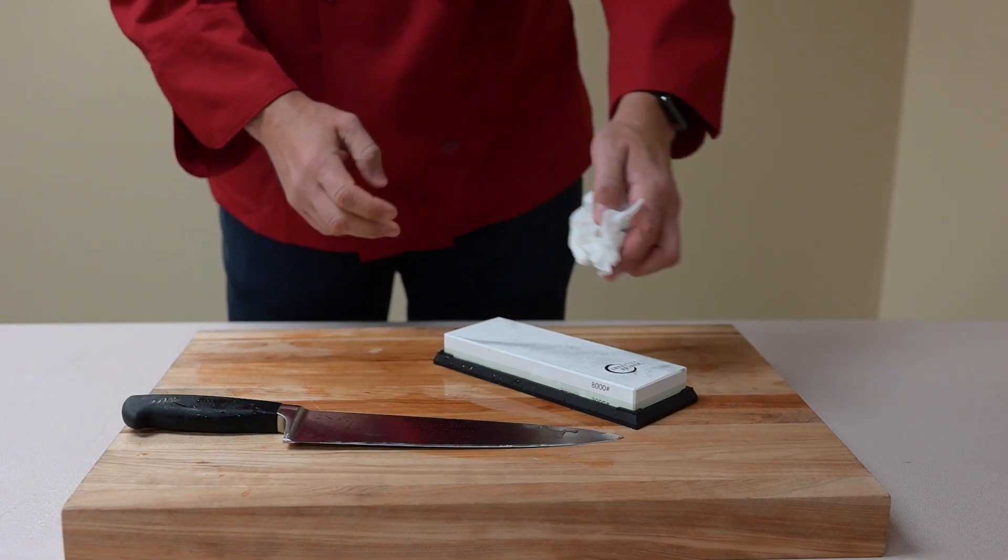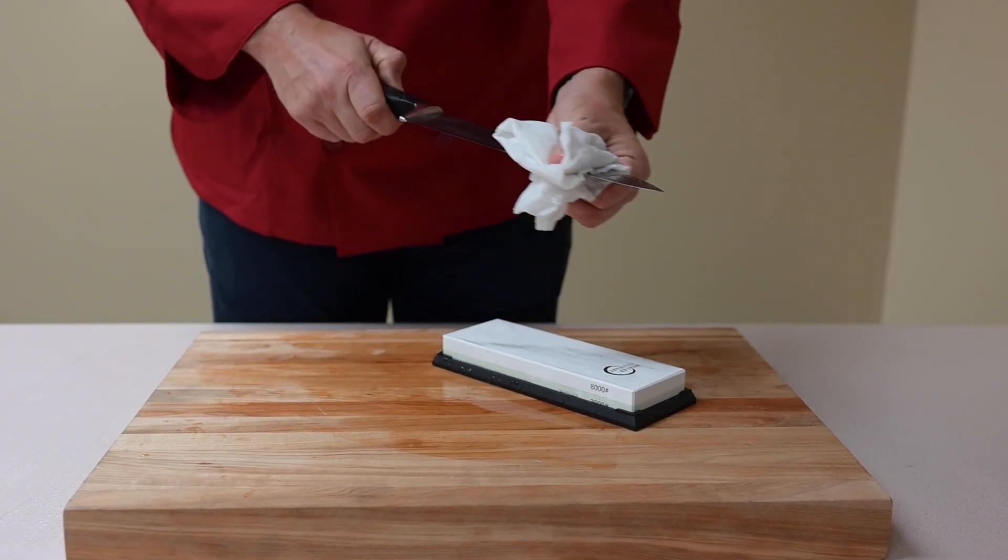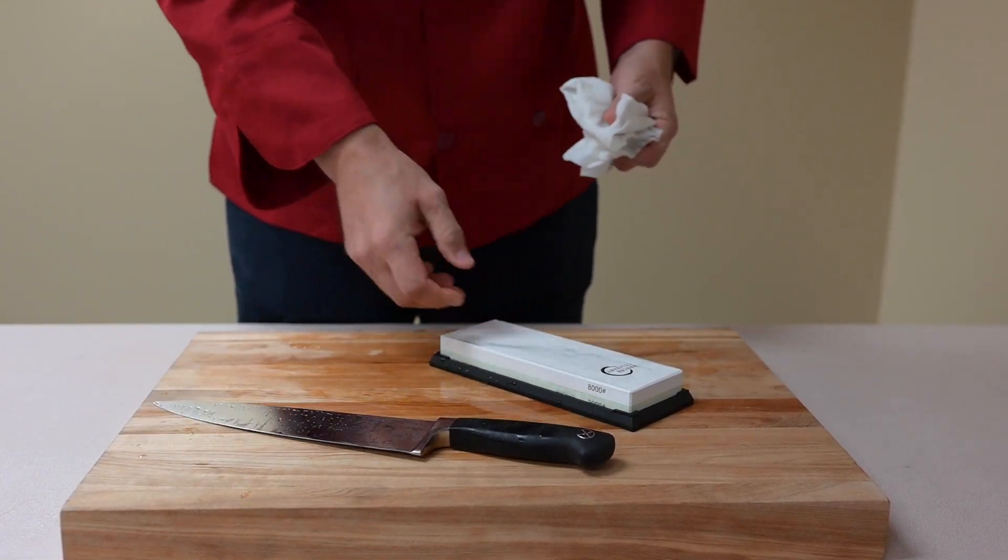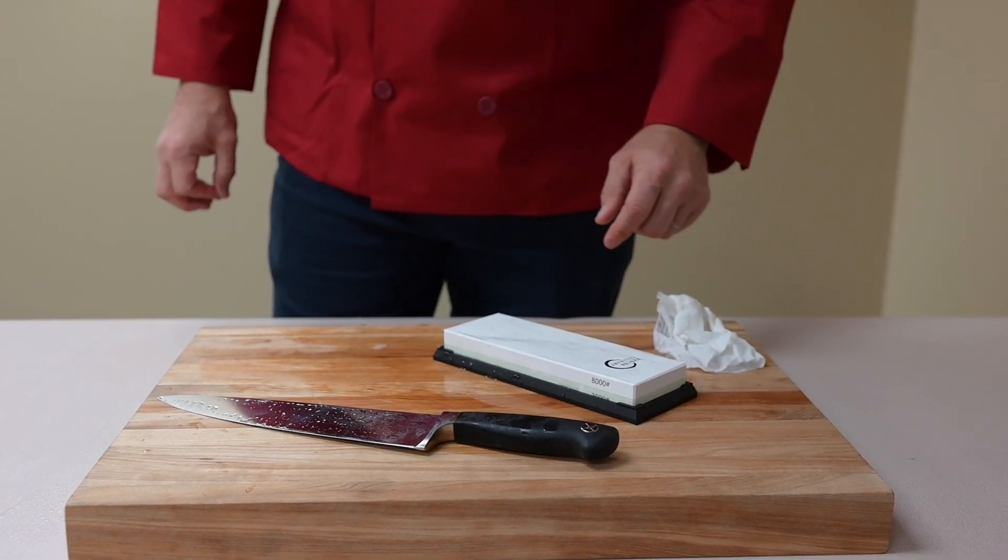You continue that process until you've gotten to the top grit stone. Once you're done with that, clean, wipe your knife down, use a little bit of honing steel to fine polish the blade and you're ready to go. Thank you for having me at Dean Supply. We appreciate your support.